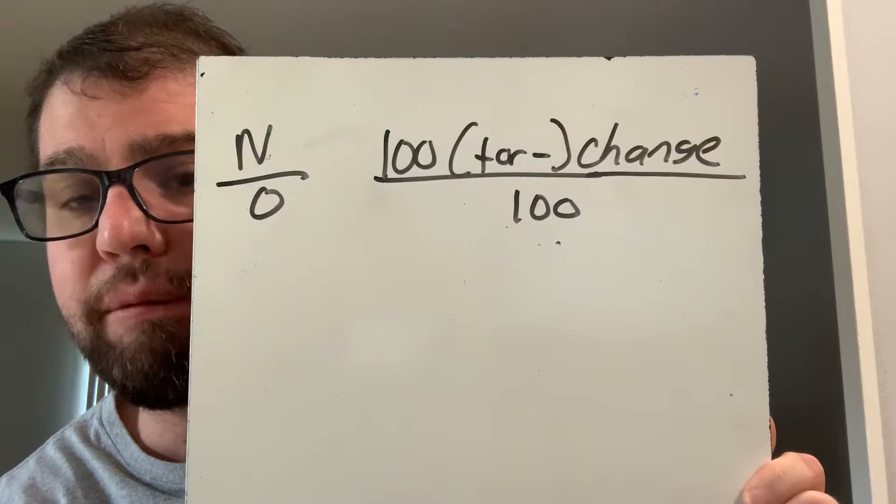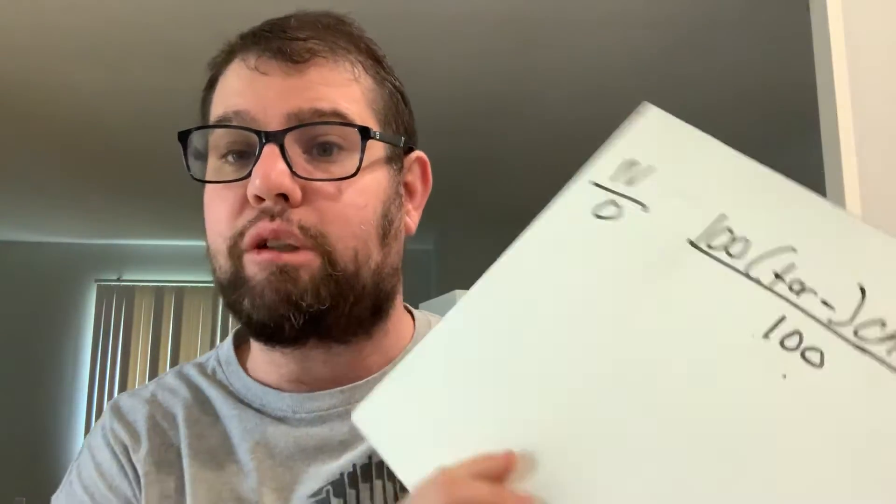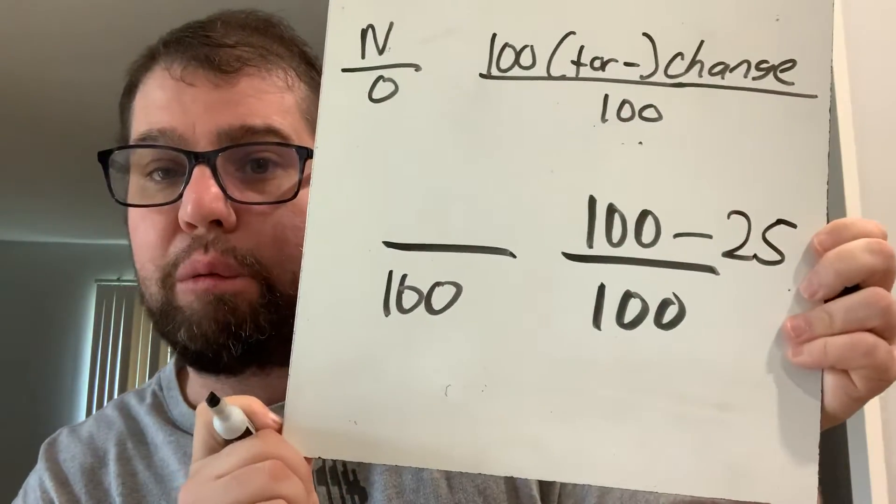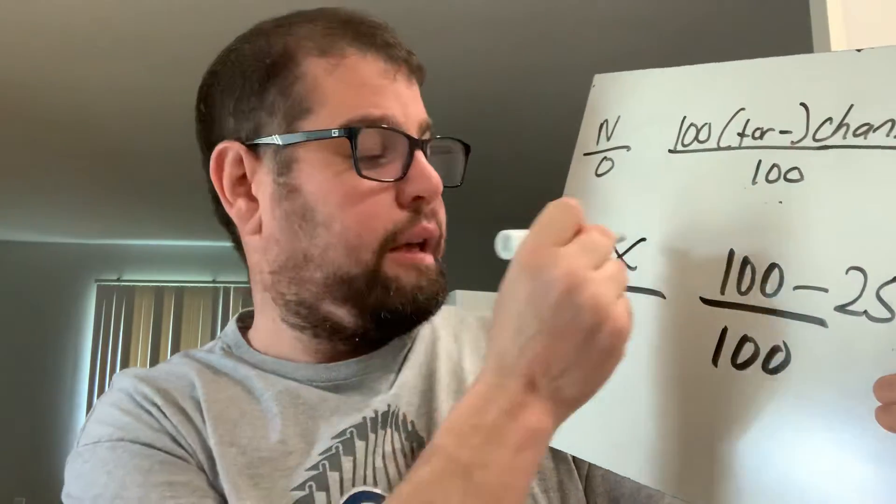We're trying to find out how much it costs now that it is discounted. Discount means the price is going to go down, which is what we like. I'm going to write the formula on top just like I always do and fill in the information. The TV was normally a hundred and sixty dollars, so I write that as my original price. I write a hundred on the bottom, and then a hundred on top — but I'm not done with the top number yet. It is discounted, so I'm going to subtract twenty-five.